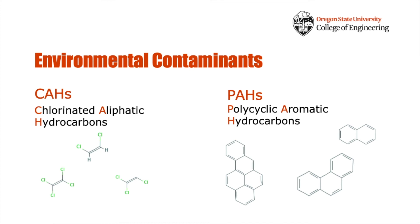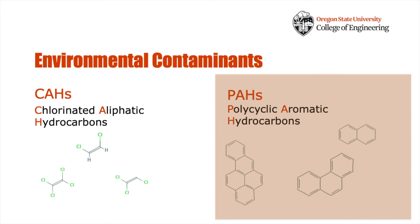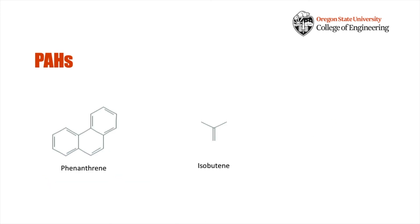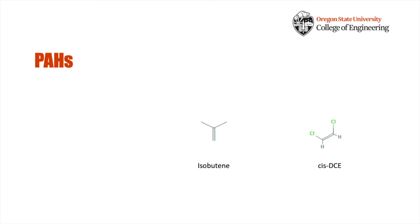If you remember from the beginning of the video, I mentioned two classes of compounds. We spent a lot of time looking at CAHs, so now let's turn our attention to PAHs. They don't have a strong resemblance to isobutene or CIS-DCE, as they're aromatic instead of aliphatic. Can ELW1's monooxygenase even co-metabolize a PAH — say, phenanthrene? Well, before I give that answer away, let's look at the compounds again.